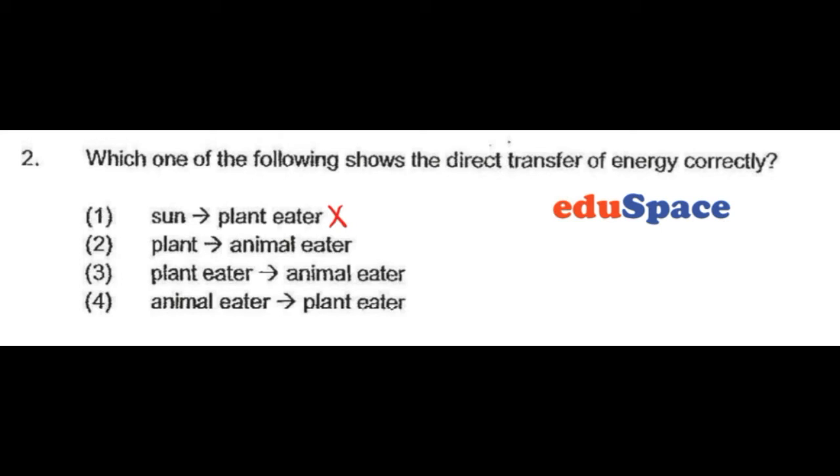The plants do not get eaten by the animal eaters directly, so in this case the energy transfer is also not direct. Plant eater gets eaten by animal eater, so that is correct. Animal eater doesn't get eaten by plant eater, so in this case our answer clearly is number three.